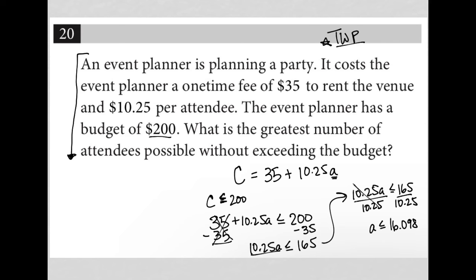The question says, what is the greatest number of attendees? Well, the greatest number would be 16. It has to be less than or equal to this whole value. So the greatest possible number of attendees you could have would be 16 attendees.